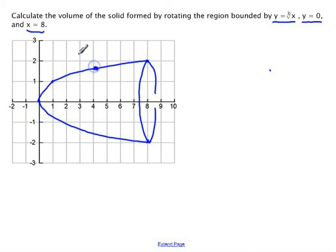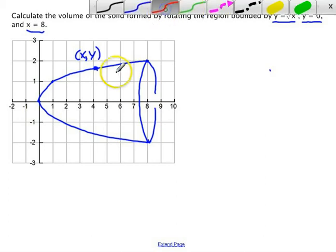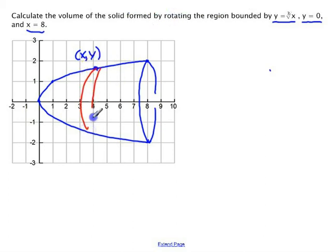So I'm going to pick a random point, x, y. On that point, I'm going to draw my disk. So there's my radius, and that equals y.